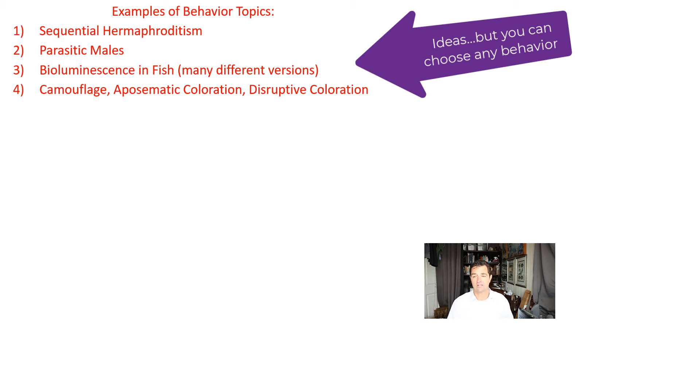And so I thought of four really quick. One is sequential hermaphroditism. One's called parasitic males, bioluminescence in fish, and then all kinds of coloration. One's camouflage, aposematic coloration, disruptive coloration.